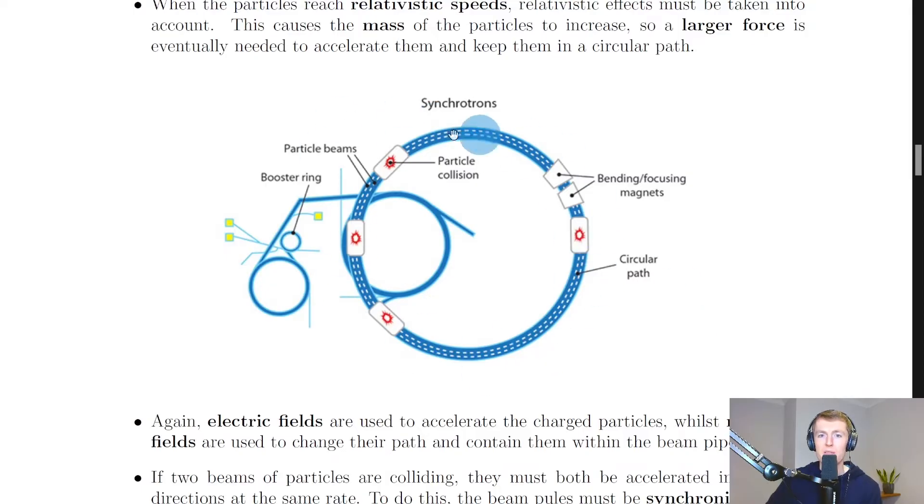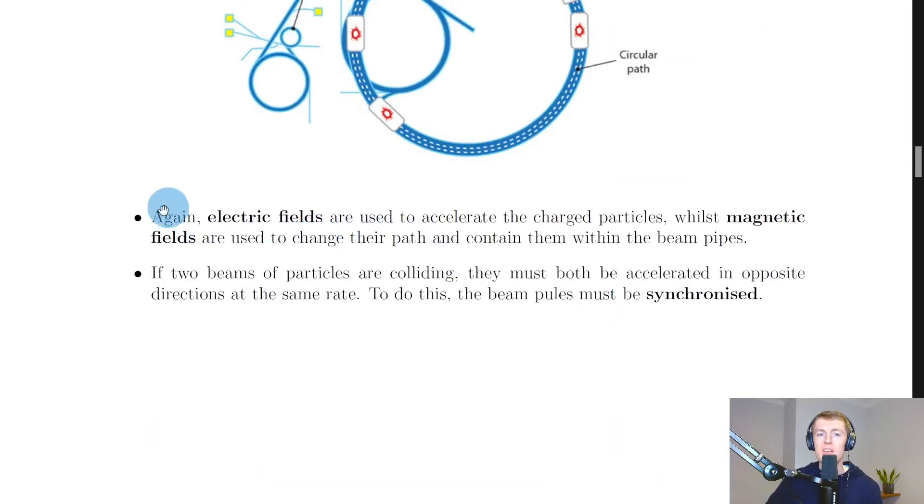And you can see we've got this circular path for the synchrotron. Remember, it's like the linear accelerator has been bent into a ring. We've then got regions where there will be particle collisions, and we've got powerful electromagnets which can be used to bend and focus the beam. Again, electric fields are used to accelerate the charged particles, whilst magnetic fields are used to change their path and contain them within the beam pipes so they don't travel in a straight line and hit the edge of the beam pipe.